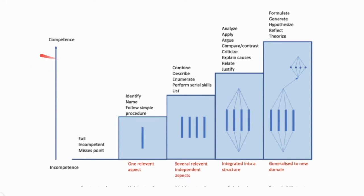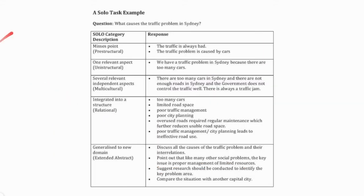With the SOLO taxonomy, the highest level of competence is demonstrated by students who generalize interrelated skills and thinking processes into a new context or domain as they formulate, generate, hypothesize, reflect, and theorize. Let's look at a learning task given to students to see what each level of SOLO looks like. The question posed could be: what causes the traffic problem in Sydney, Australia? A response that does not demonstrate any competency would be pre-structural — it misses the point. For example, a student might respond: 'The traffic is always bad. The traffic problem is caused by cars.'